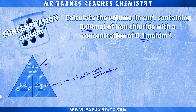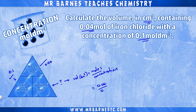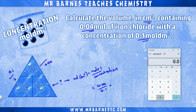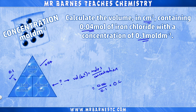We're given the moles in the question, which is 0.04. We're also given the concentration, so we can work out the volume: 0.04 moles divided by 0.1 moles per decimetre cubed. This gives an answer of 0.4 decimetres cubed.